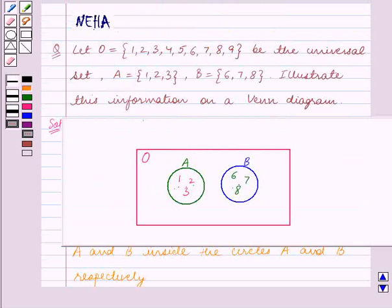Now the remaining elements of the set O which are not in the sets A or B are 4, 5, and 9. So we write down the elements 4, 5, and 9 in this portion outside the circles.